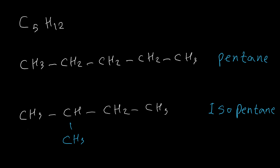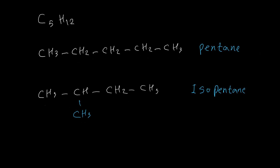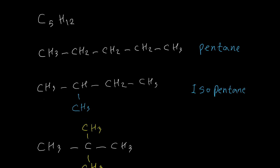We can also have another structure: three carbons as a chain with two branches. The name for this pentane isomer is neopentane.